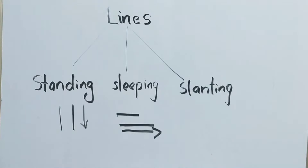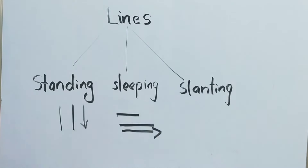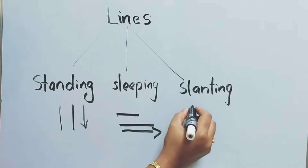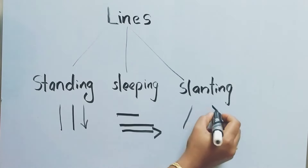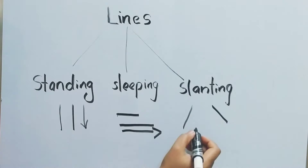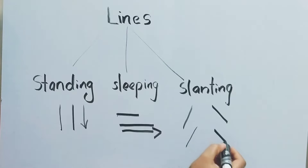Next one, slanting line. It is also a line with a small slope. This is left slanting and this is right slanting.